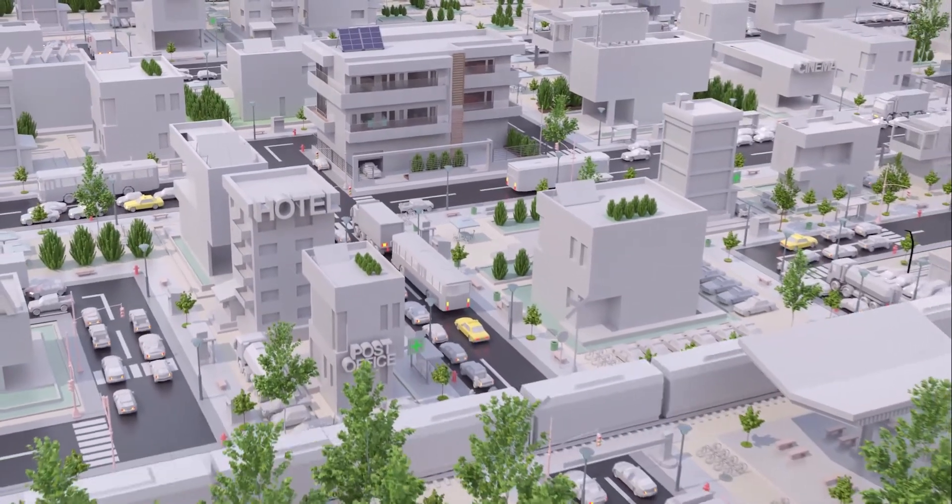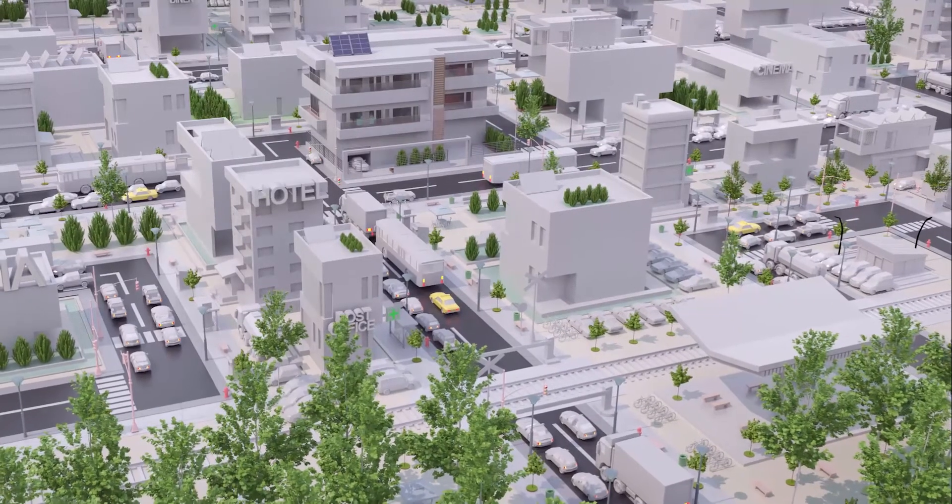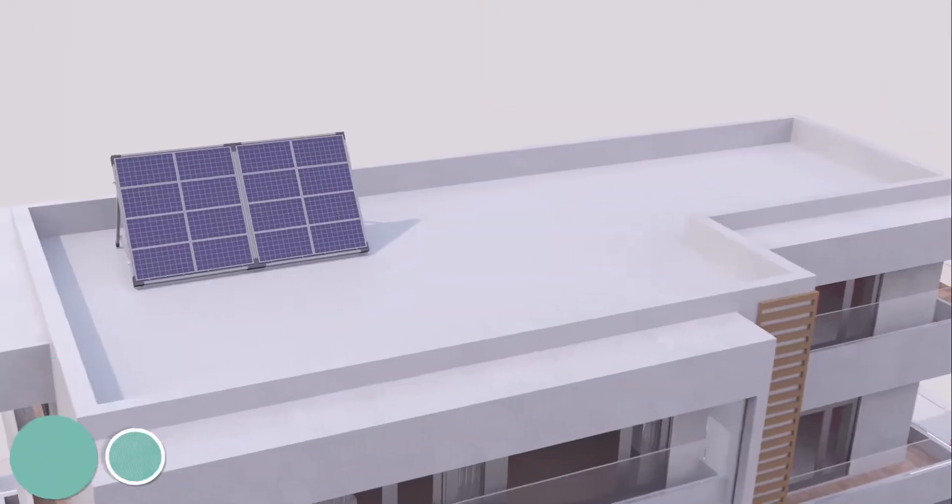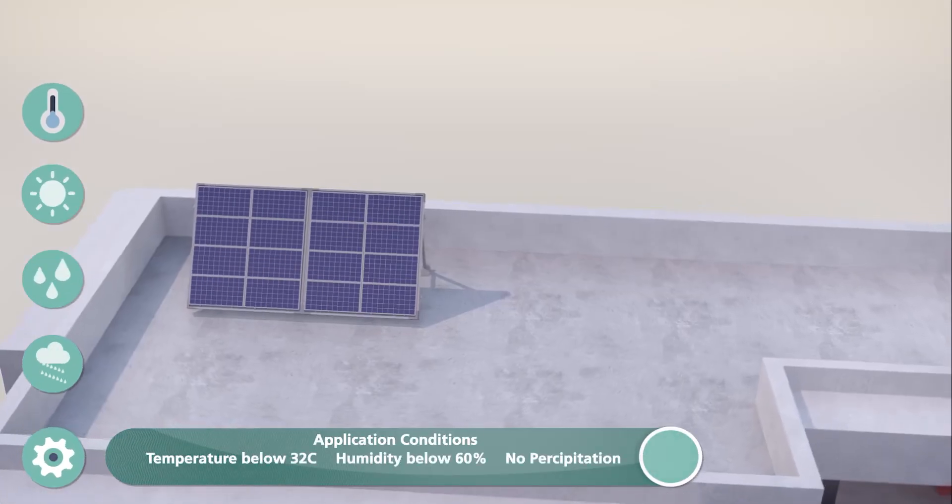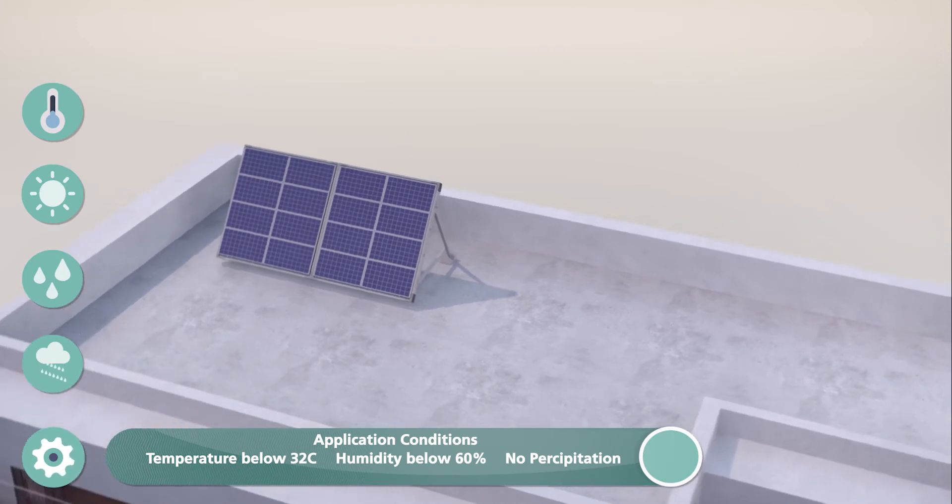The system should not be applied when temperature exceeds 32 degrees Celsius and relative humidity exceeds 60%, and when rainfall is expected for the next 3-4 days.